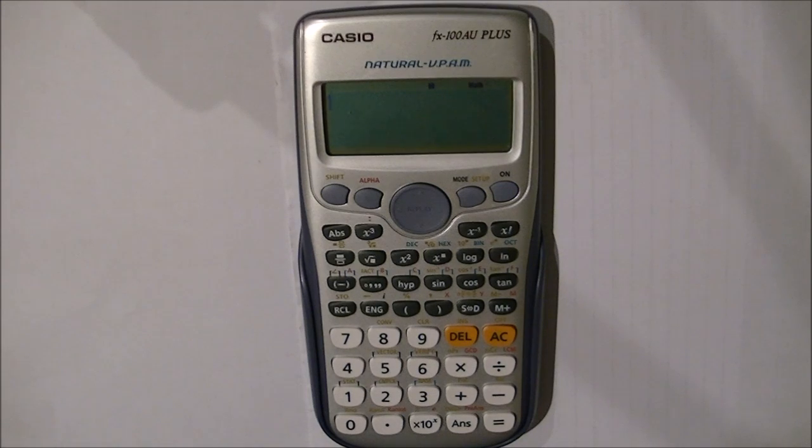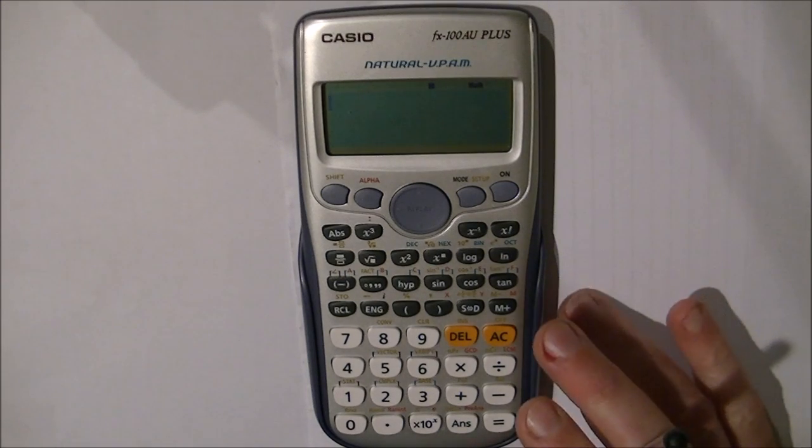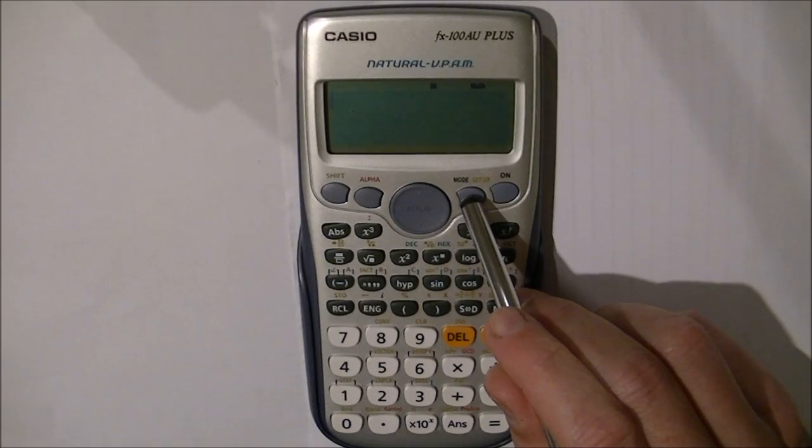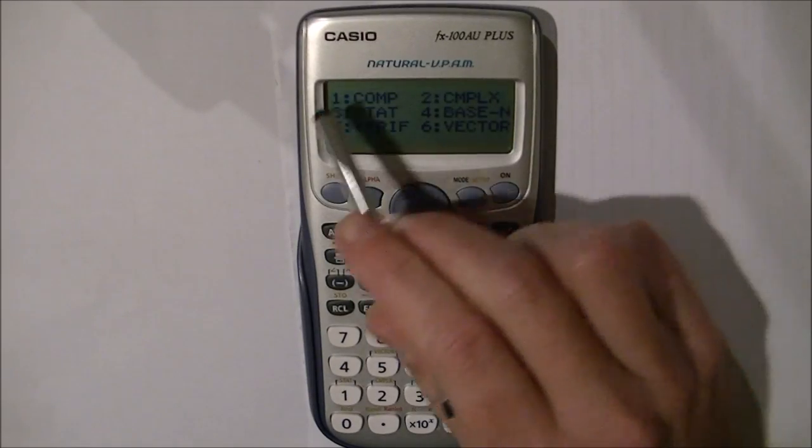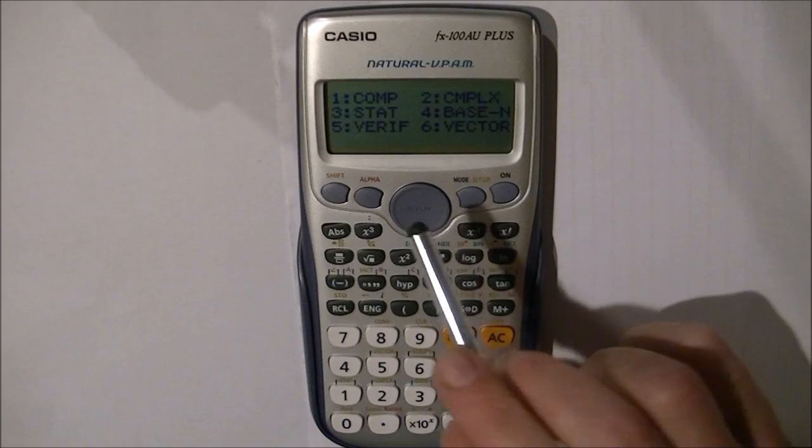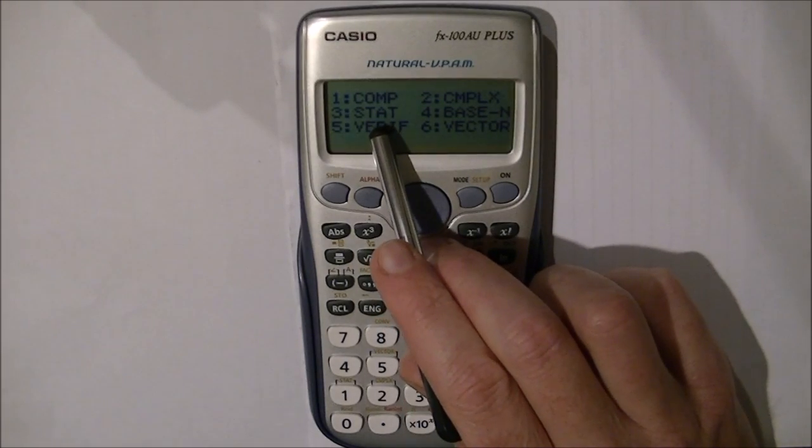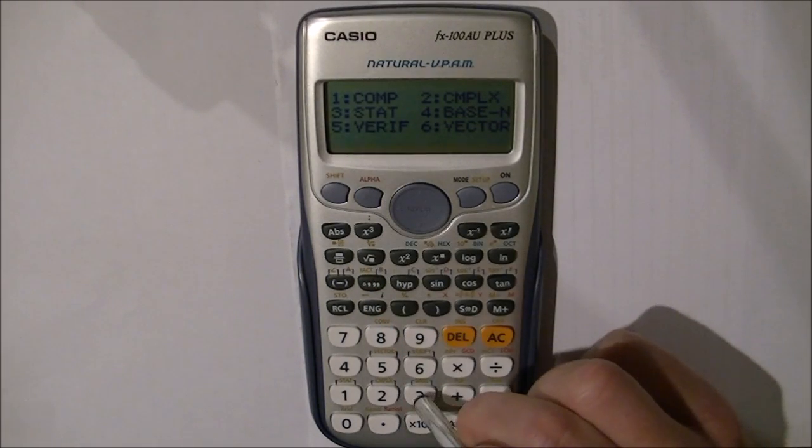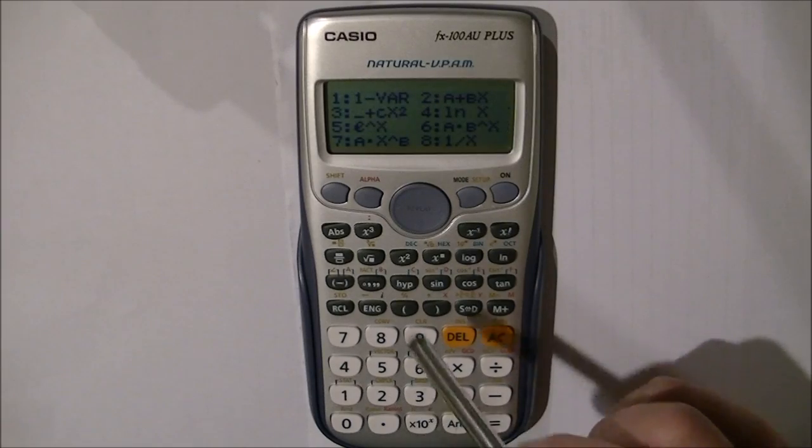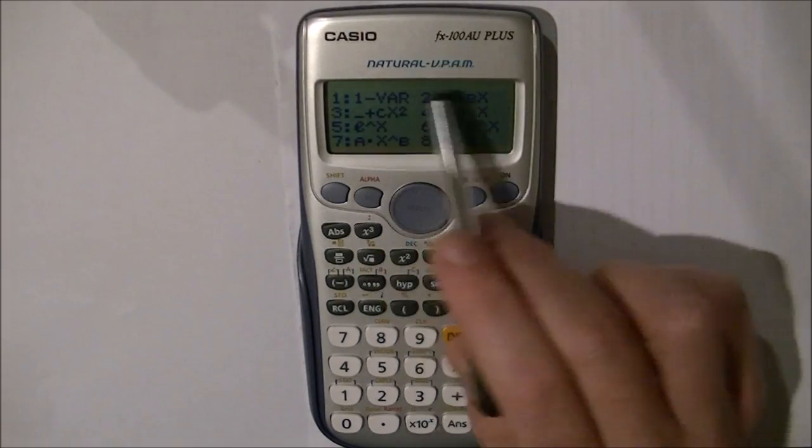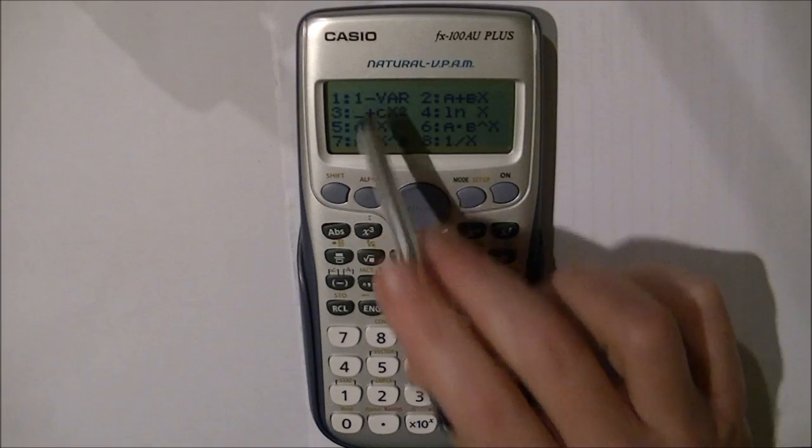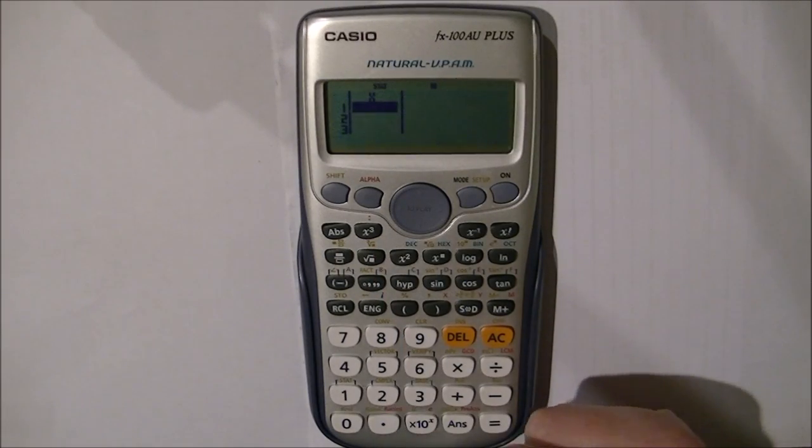The first thing is how to get into statistics mode. It's straightforward. Press the MODE key, and these options come up. The option I want is option 3, which is statistics. Press 3, and more options appear. I want to press 1 for the standard mode.